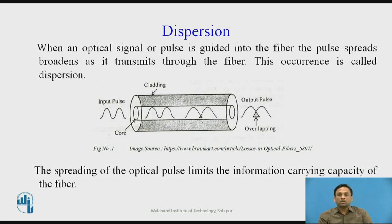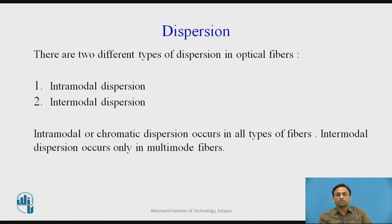The effect of dispersion is that the spreading of an optical pulse limits the information-carrying capacity of the fiber — meaning the fiber optics will not transmit data as it should. There are two different types of dispersion in optical fibers: intramodal dispersion and intermodal dispersion. Intramodal dispersion is also known as chromatic dispersion and occurs in all types of fiber — both single mode and multimode. Intermodal dispersion occurs only in multimode fiber and does not take place in single mode since only the fundamental mode is transmitted there.